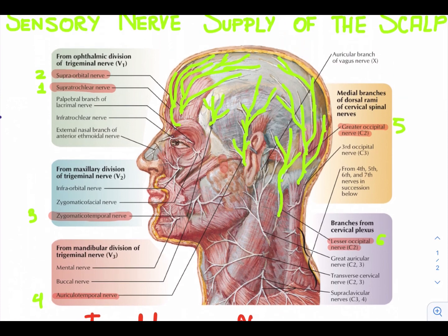The first one is the supratrochlear nerve. This is the supratrochlear nerve. It's basically a branch of the ophthalmic division of the trigeminal nerve. It winds around the superior orbital margin and supplies the scalp. It passes backward close to the median plane and reaches nearly as far as the vertex of the skull.